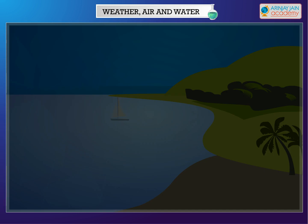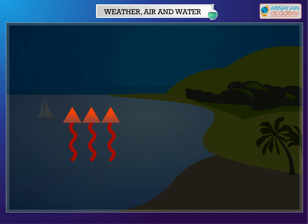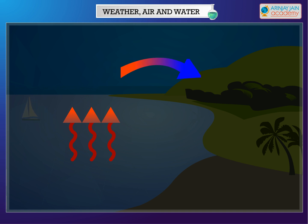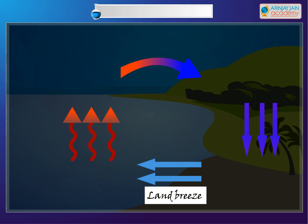At night there is no sunlight, so it is exactly the reverse. The land cools down faster than the sea, so the warm air above the sea rises up while the cool air from the land rushes towards the sea. This is called the land breeze.